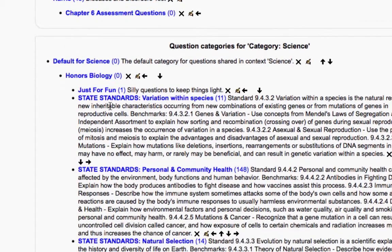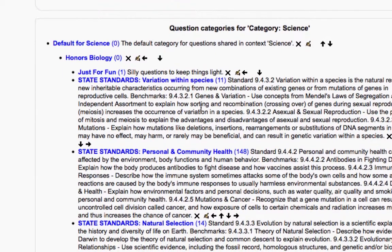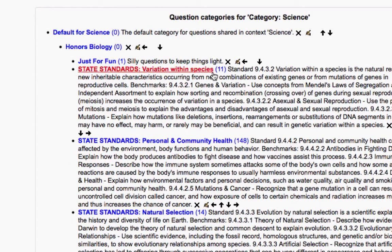However, if we store the questions farther up in the hierarchy, like in the science category, if somebody like Mike were to post questions here, you can see for example that this variation in species category has 11 questions...